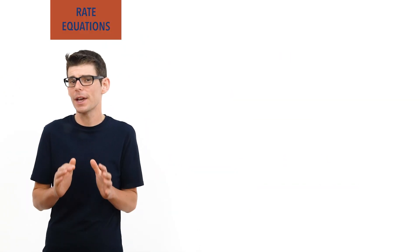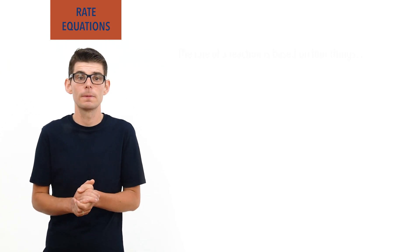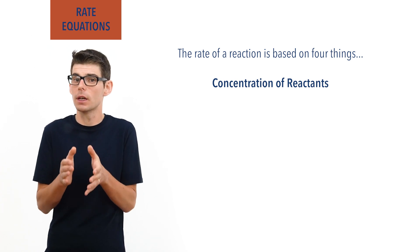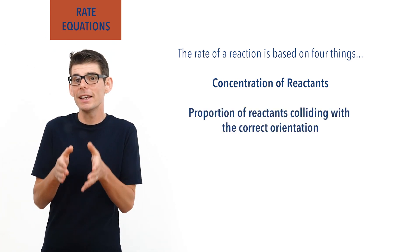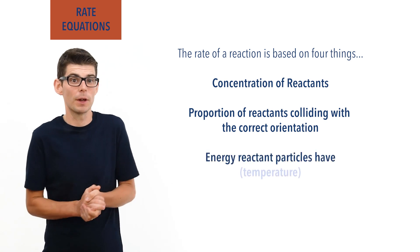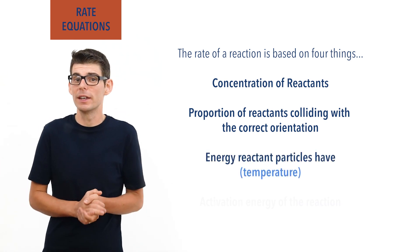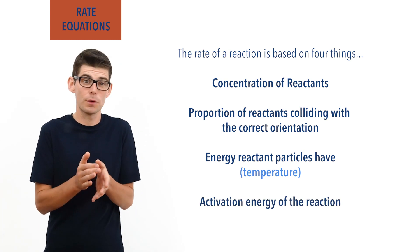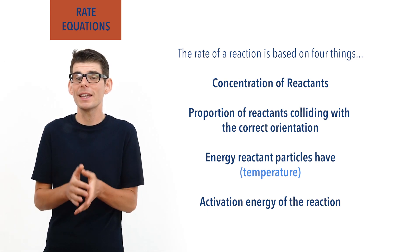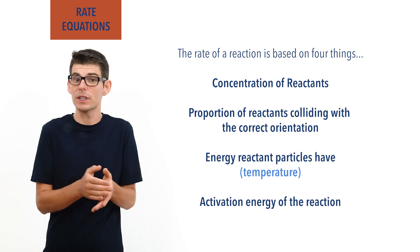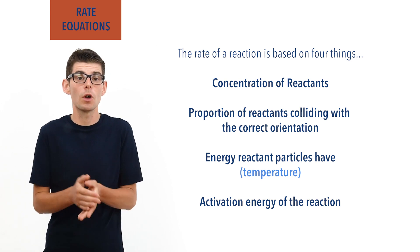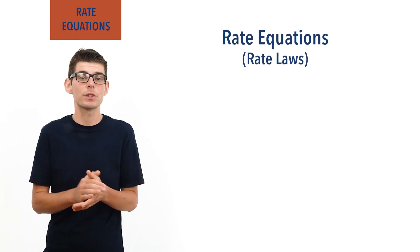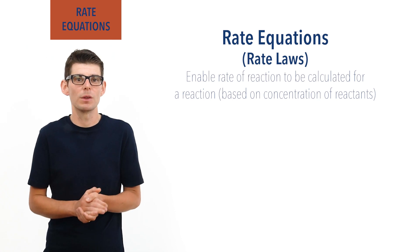The rate of a reaction is essentially based on four things: the concentrations of reactants, the proportion of reactants colliding with the correct orientation, the energy these particles have determined by temperature, and the activation energy of the reaction. If we know the effect and values of all of these things for a reaction, we can link them all together and calculate its rate based on the specific temperature and concentration of reactants being used. Rate equations are expressions that allow us to do this, and they always have the same general structure.